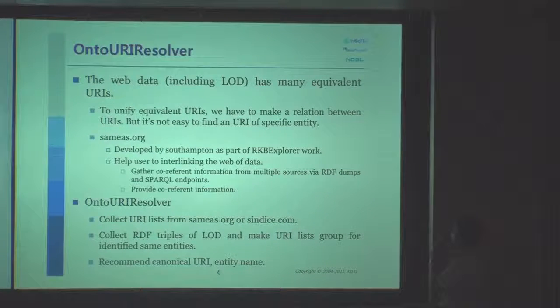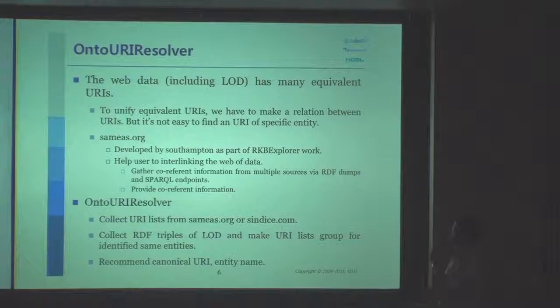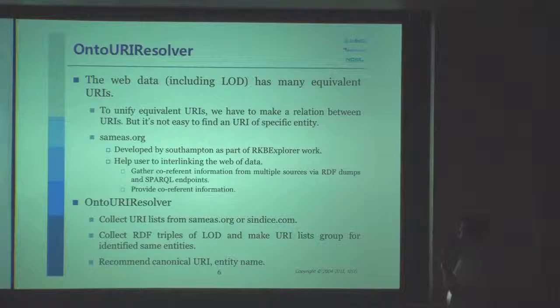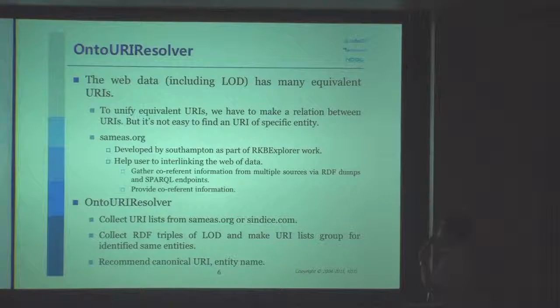The web data has many inherent URIs. To identify inherent URIs, we have to make a relation between URIs. But it is not easy to find the URIs of a specific entity.